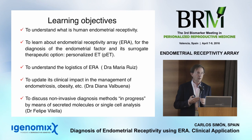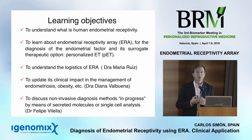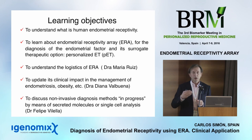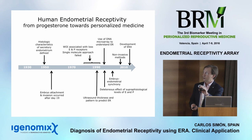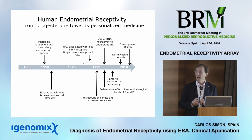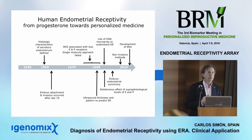The ERA test is being performed at roughly 800 biopsies per month, so more than 8,000 patients have already been analyzed. We have a huge dataset and this is what we want to share with you this afternoon. First, I would like to set the scene by trying to understand human endometrial receptivity and where we come from.